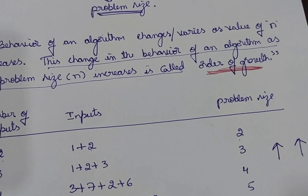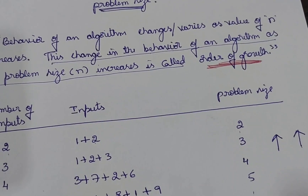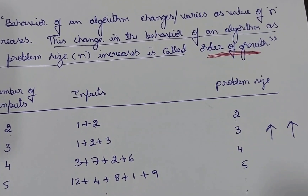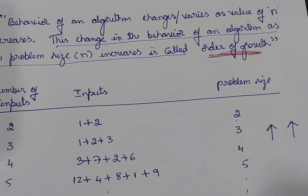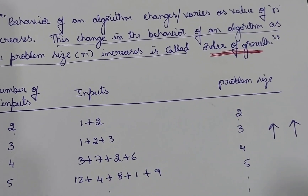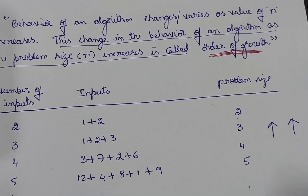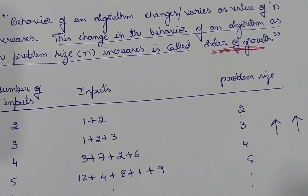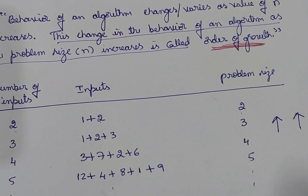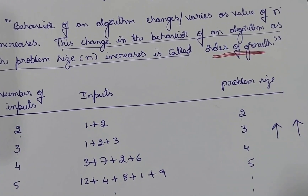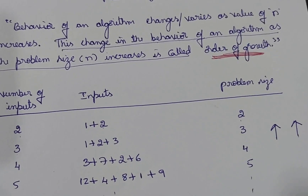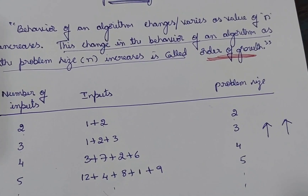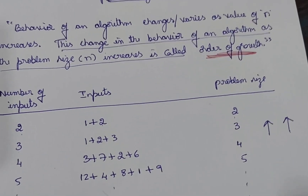In terms of software also, if the software is taking only a small number of inputs, it will take very less time. When we give too many inputs, it will take too much time, and sometimes the program may even hang. So that change in the behavior of our algorithm as we increase the problem size is what we need to study. The study of change in the behavior of an algorithm as we increase the problem size is called order of growth. We should represent order of growth in terms of mathematical functions — that is, basic efficiency classes.